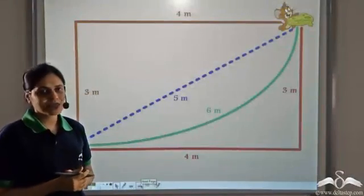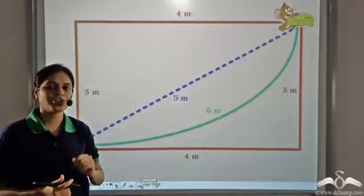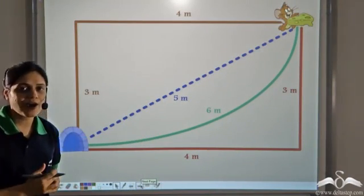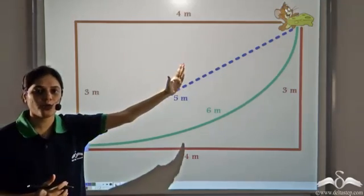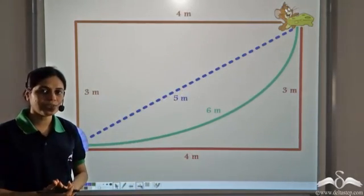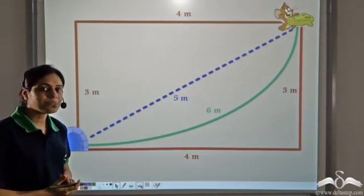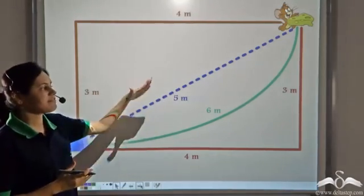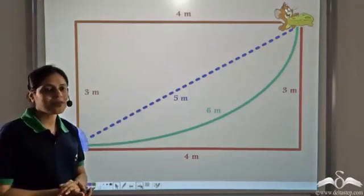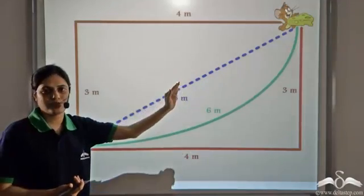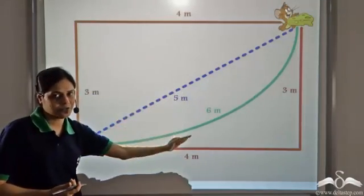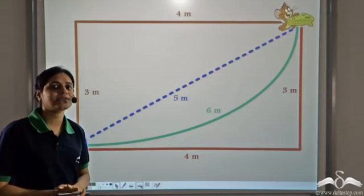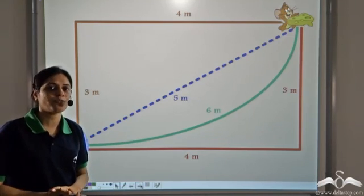Jerry has now reached the cheese. If I ask you how far is Jerry from his home, you might say seven meters, or five meters, or six meters, depending on the path you are considering. So how are we supposed to know exactly how far Jerry is from his home?